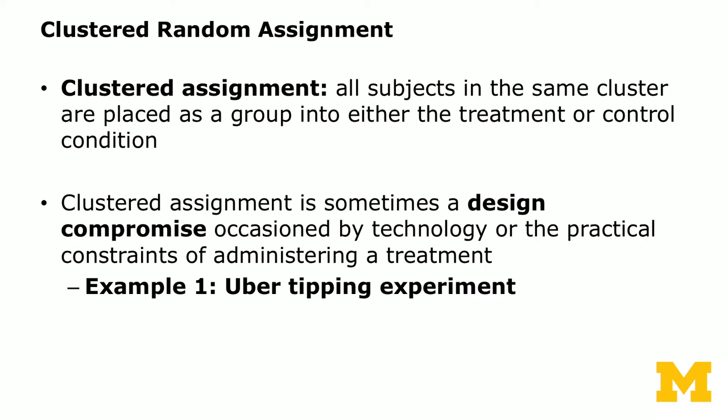As an experimenter, remember that clustered assignment is often a compromise because assignment at a lower level is not possible or causes problems. We'll use the Uber tipping experiment from week two — which illustrated the phased-in design — to show this. This experiment also uses both clustered random assignment and blocking.